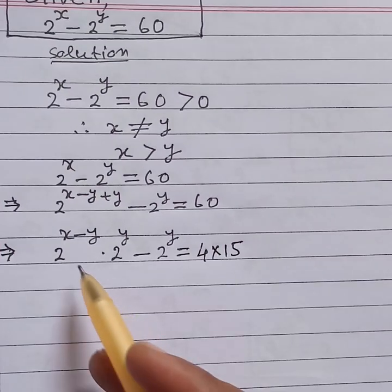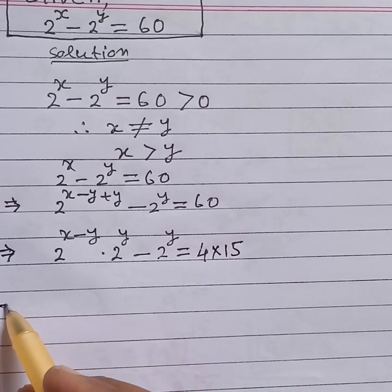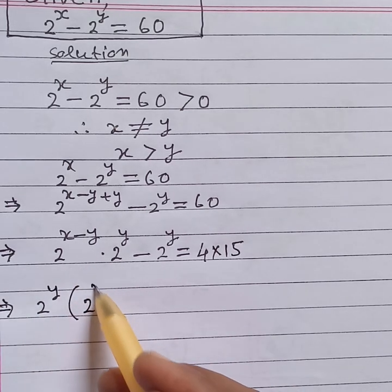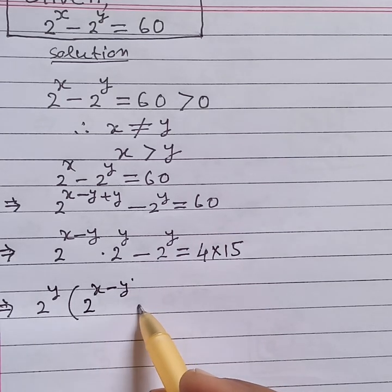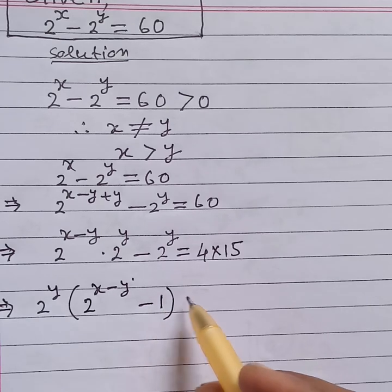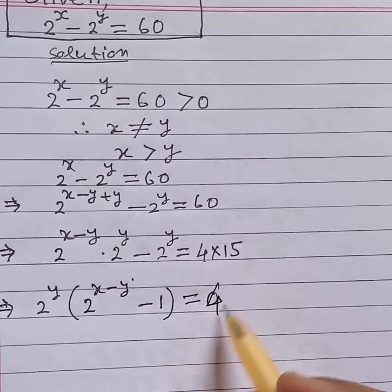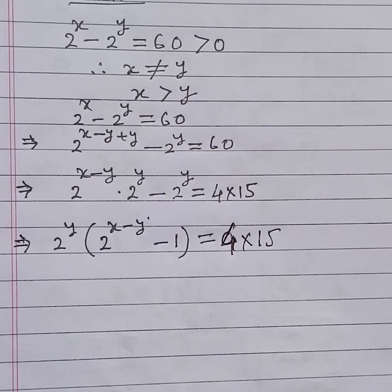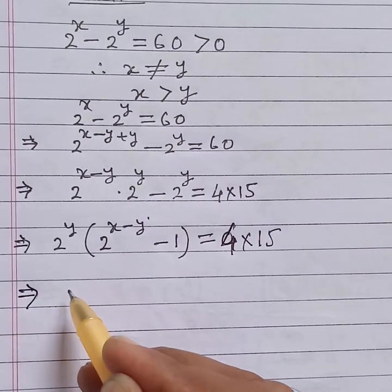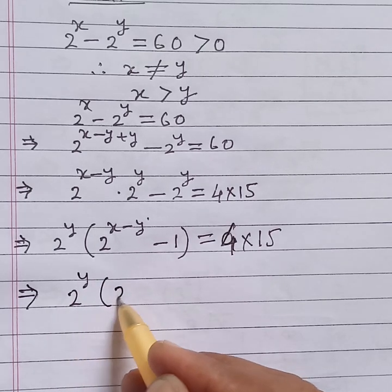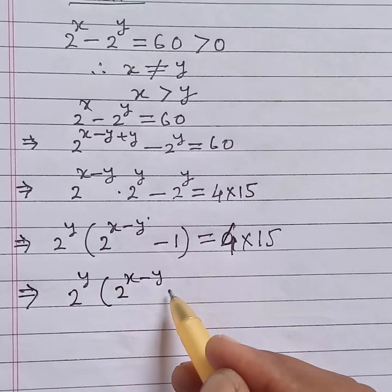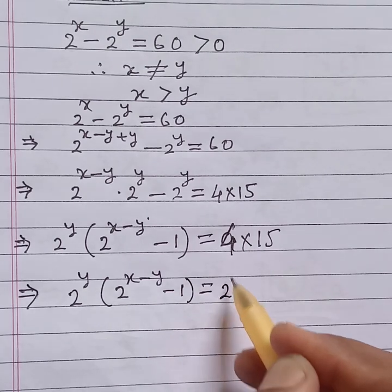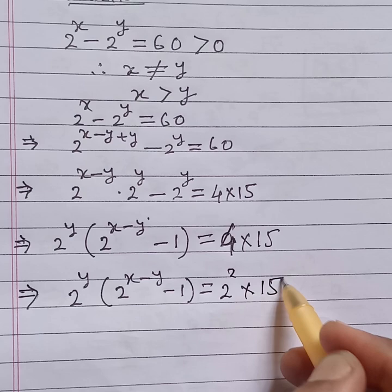Minus 2 to the power y is equal to 60, which means 4 into 15. From these two terms, we take out 2 to the power y. Then it will be 2 to the power y into 2 to the power (x minus y) minus 1, is equal to 4 into 15, where 4 means 2 squared, into 15.